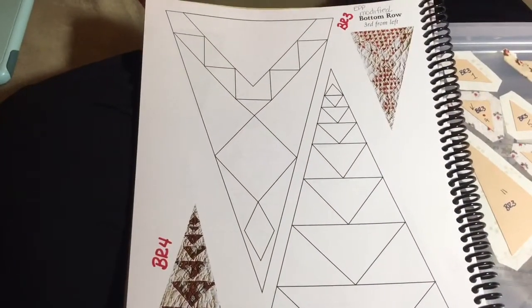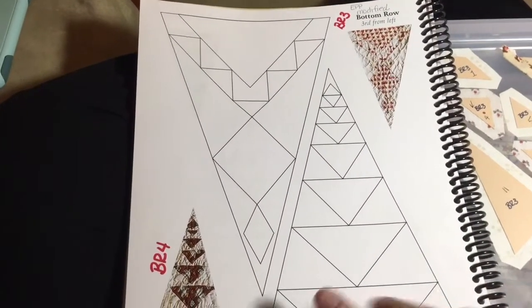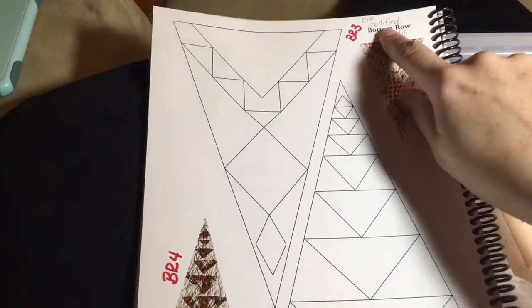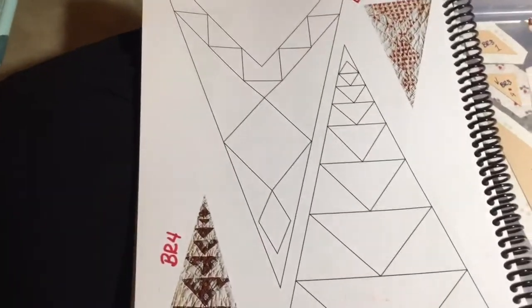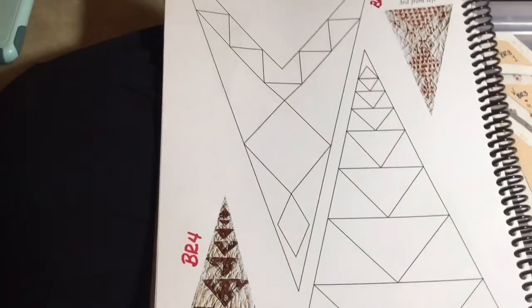I'm up to the third triangle on the bottom row, and this is a modified triangle. As you can see, this is kind of a floater, so they've converted this in the booklet,